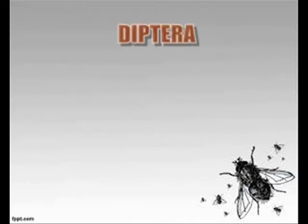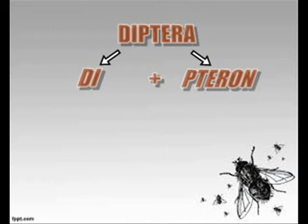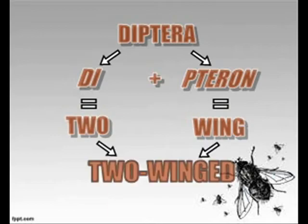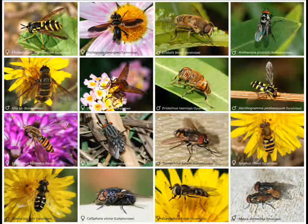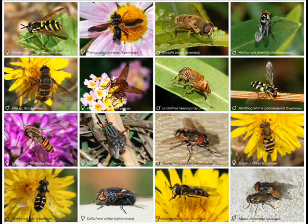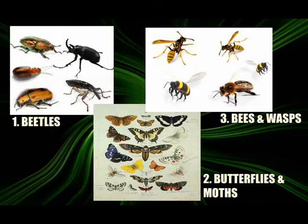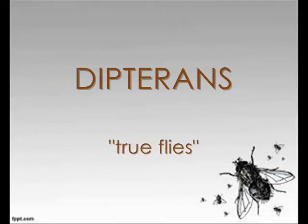Diptera comes from the Greek words 'di' and 'teron', which mean 'two' and 'wing' respectively. In short, this group is composed of two-winged insects. Order Diptera has more than 100,000 known species and is considered the fourth largest insect order after beetles, butterflies and moths, and bees and wasps. Dipterans are considered true flies.